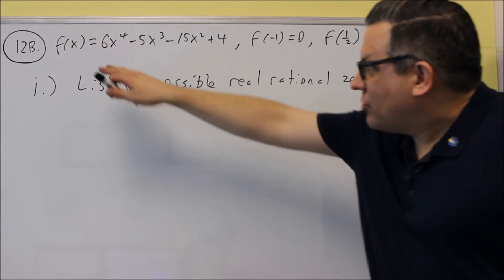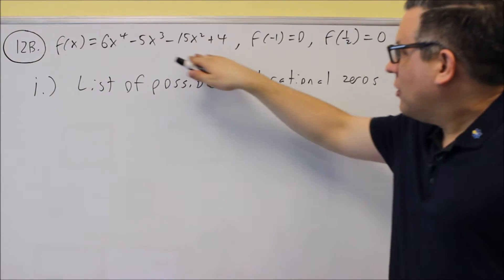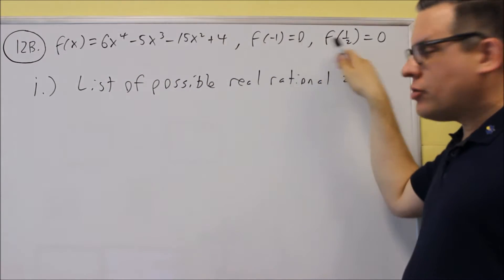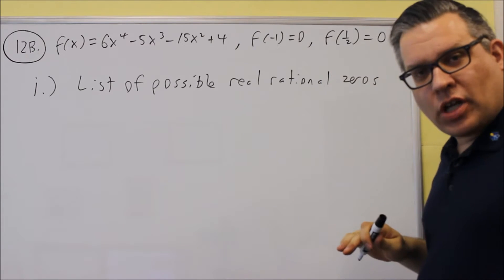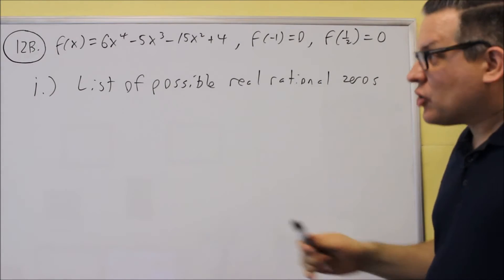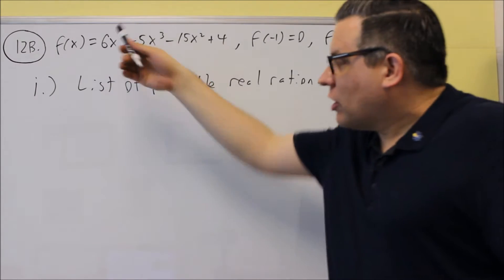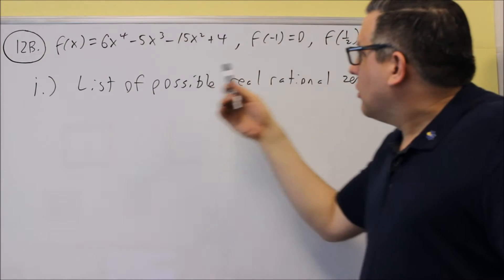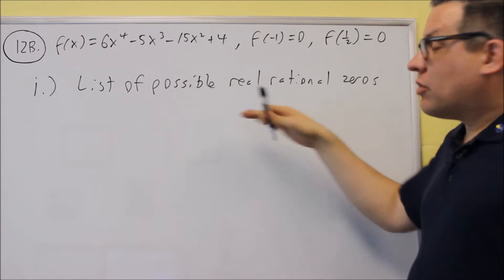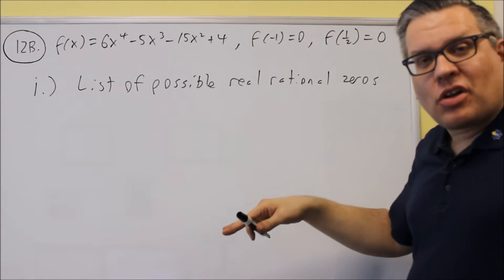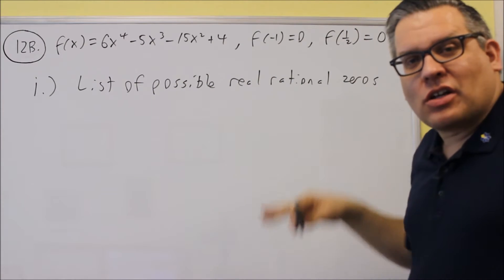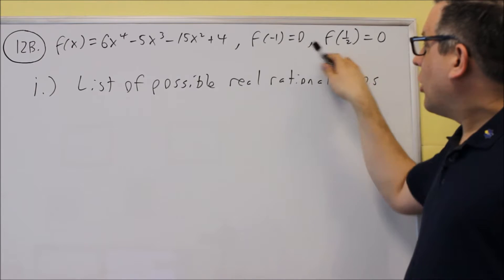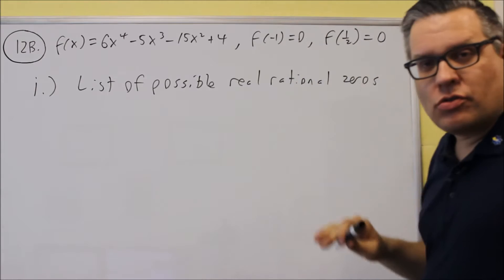For part B, 12B, notice that there are two zeros given. That's because we have a fourth power. If it's a fourth power, you'll have to eventually do synthetic division twice to take it down to a quadratic equation, so that's why you're going to get two zeros.